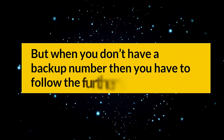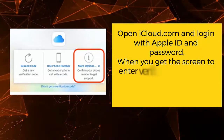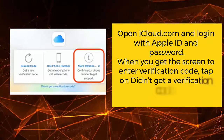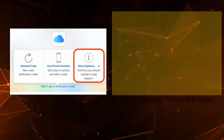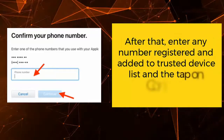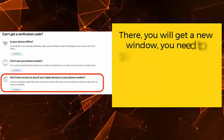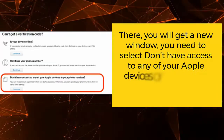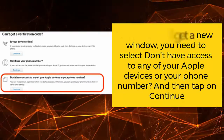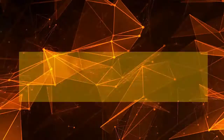If you don't have a backup number, follow these steps instead. Open iCloud.com and log in with your Apple ID and password. When you reach the screen to enter a verification code, tap 'Didn't Get a Verification Code,' then tap 'More Options.' Enter any number registered and added to your trusted device list, then tap Continue. In the new window, select 'Don't Have Access to Any of Your Apple Devices or Your Phone Number,' then tap Continue and follow the on-screen instructions to recover your Apple ID and phone number.